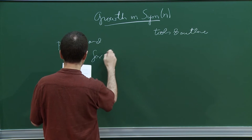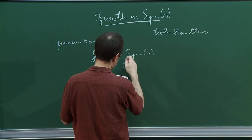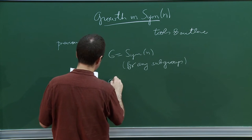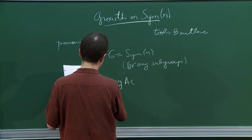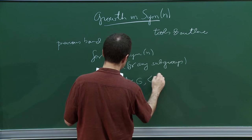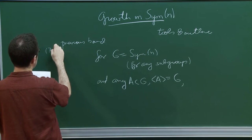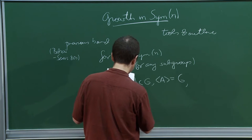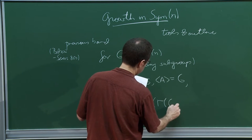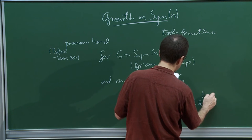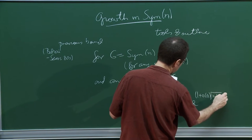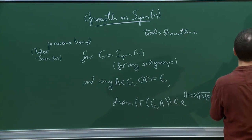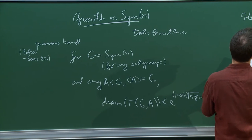What was known? For G = C(m,n), or really for any subgroup thereof, we would have that for any A that generates G — this was known from Babai-Seress in the late 80s — the diameter of the group is bounded by basically e^{sqrt(N log N)}. So this is of course very, very far from being a power of N.